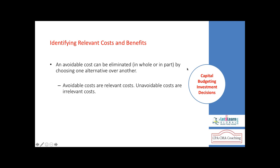Another example: you purchased a delivery van for fifty thousand dollars with an effective life of five years. In the first year there is an outflow of fifty thousand dollars; in years two through five you don't have any cash outflow for this amount but are still using the asset. You recognize the cost over five years through depreciation. Depreciation is a sunk cost because the cash flow already took place in the first year — therefore it is not relevant to future decisions.